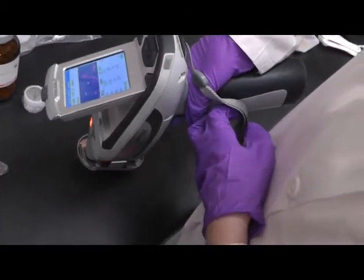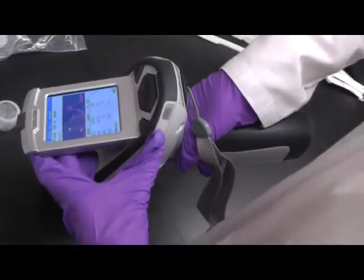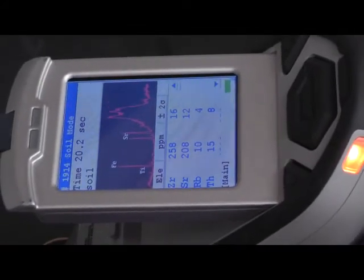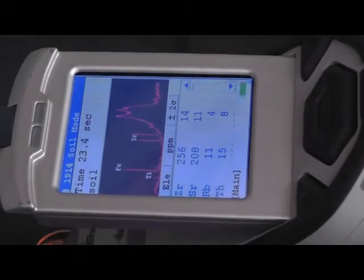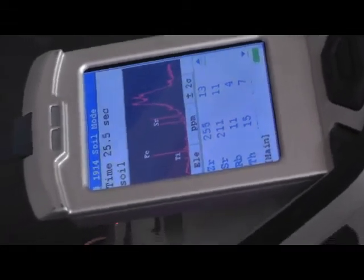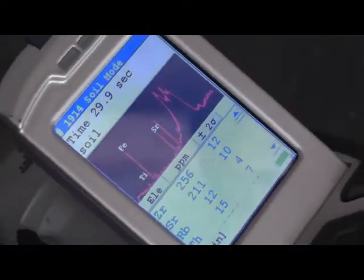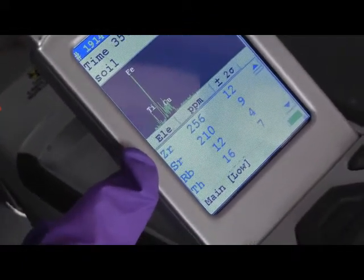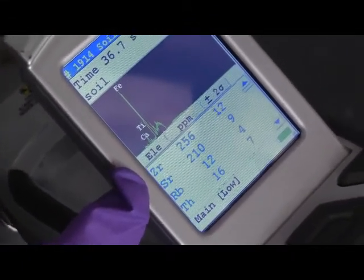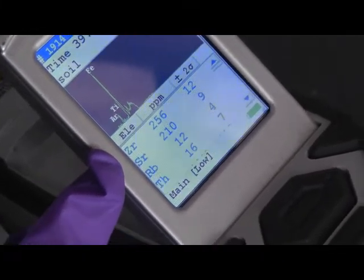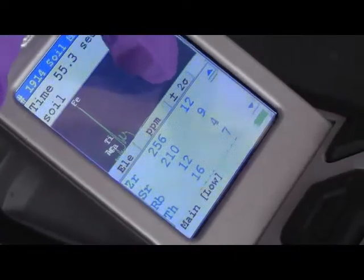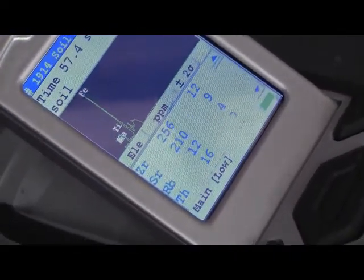And on the screen, you can see that there are already measurements, preliminary measurements coming as time goes on. And in the soil mode, it's going to give you three information. Elements, which is the elements XRF is measuring right now. And there's the unit ppm. The last column is the error measurement.